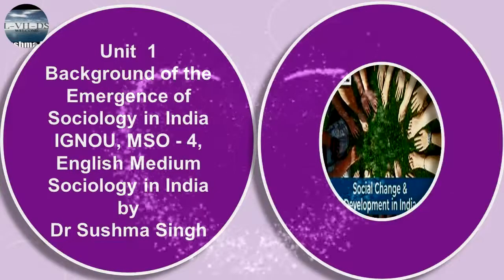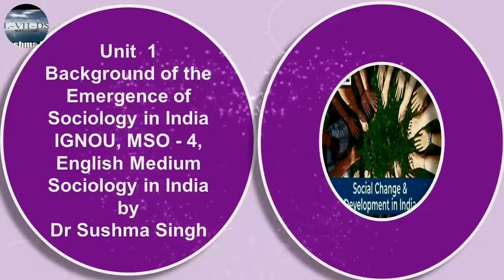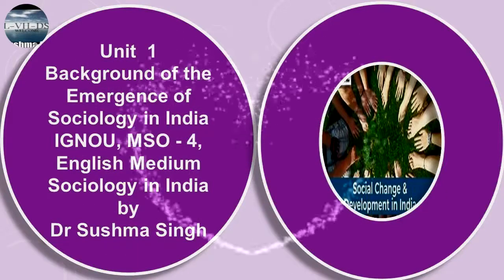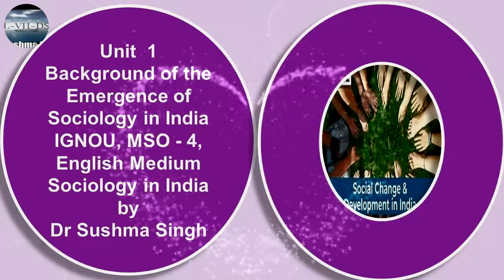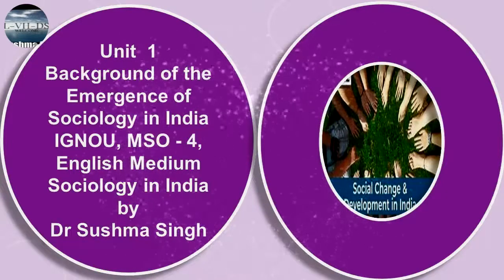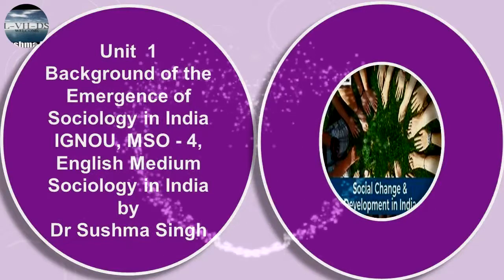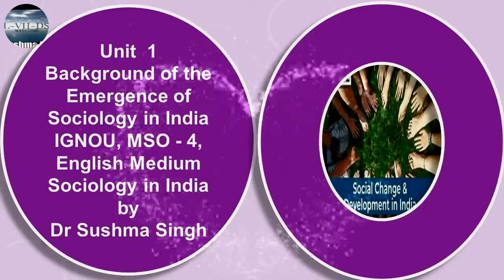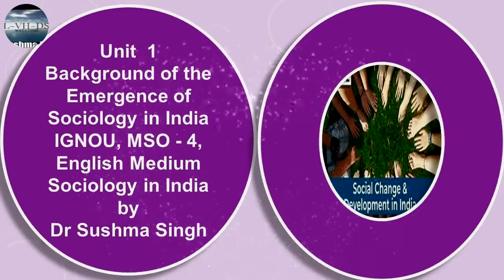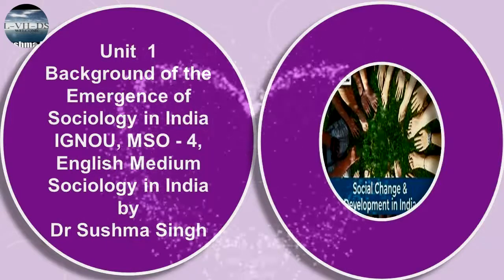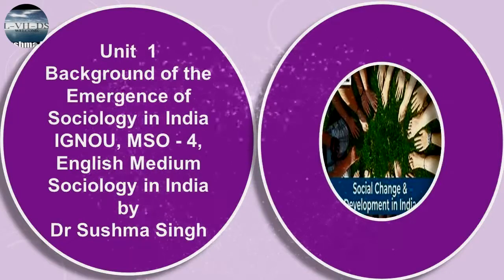By the end of the 18th century, three types of Western interpretation of Indian reality became evident: first, the Orientalists; second, the missionary; and third, the administrative.